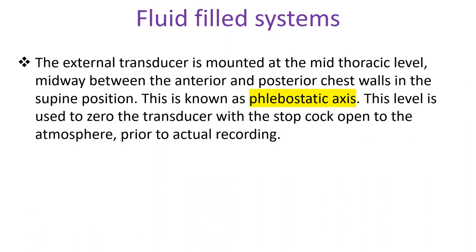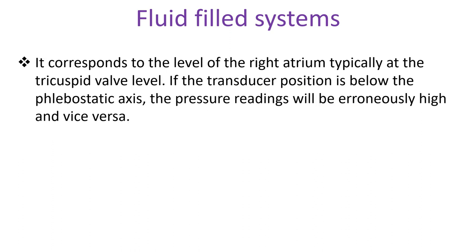The external transducer is mounted at the mid-thoracic level, midway between the anterior and posterior chest walls in the supine position. This is known as the phlebostatic axis. This level is used to zero the transducer, with the stopcock open to the atmosphere prior to actual recording. It corresponds to the level of the right atrium, typically at the tricuspid valve level. If the transducer position is below the phlebostatic axis, the pressure readings will be erroneously high, and vice versa.